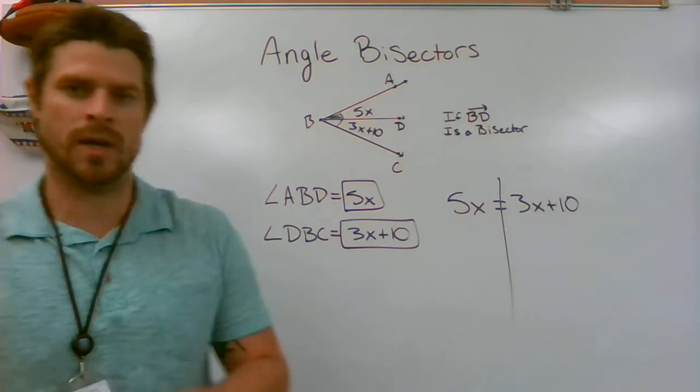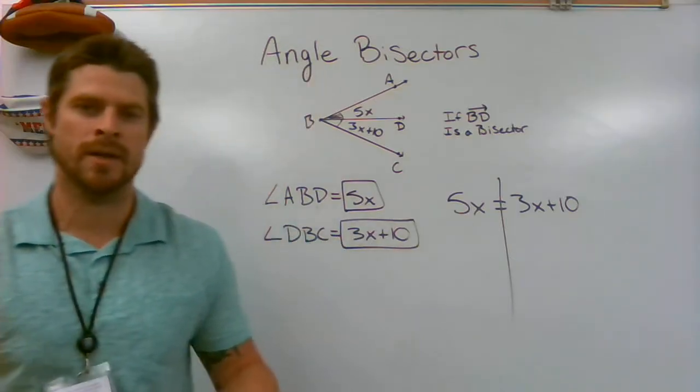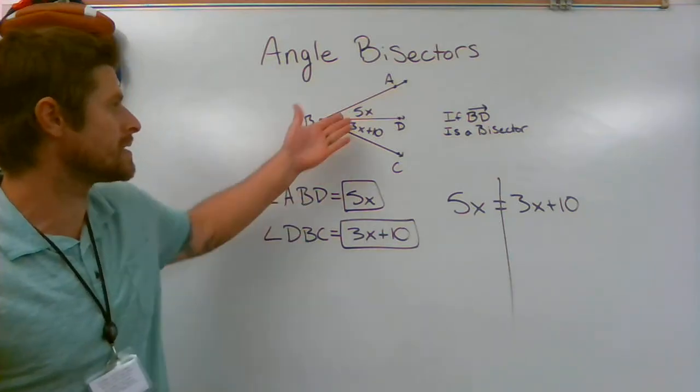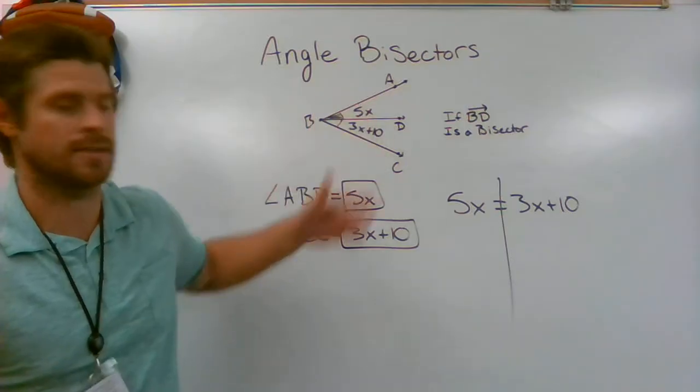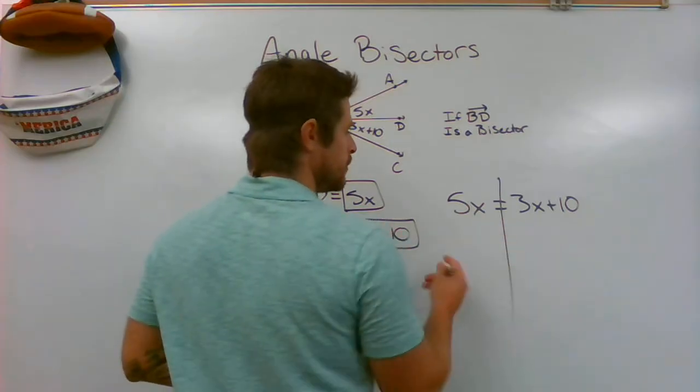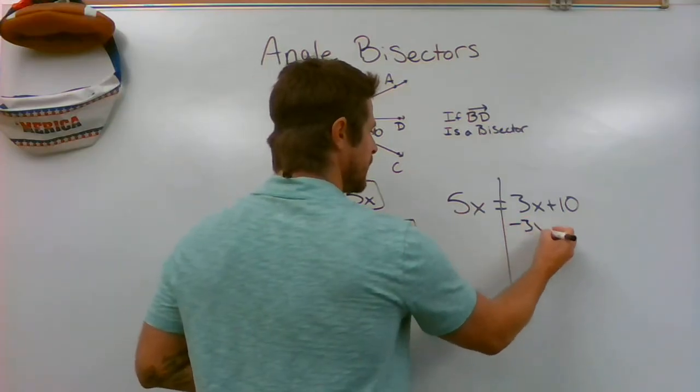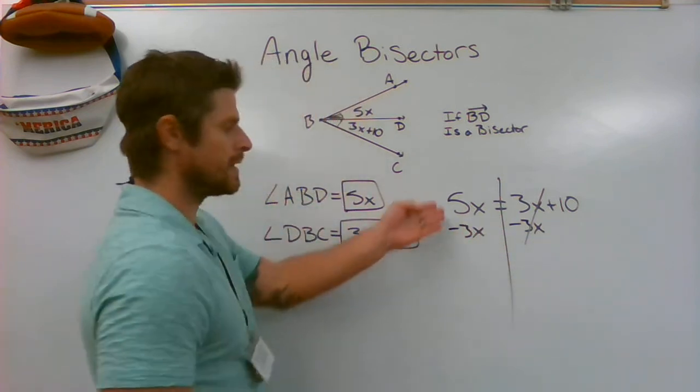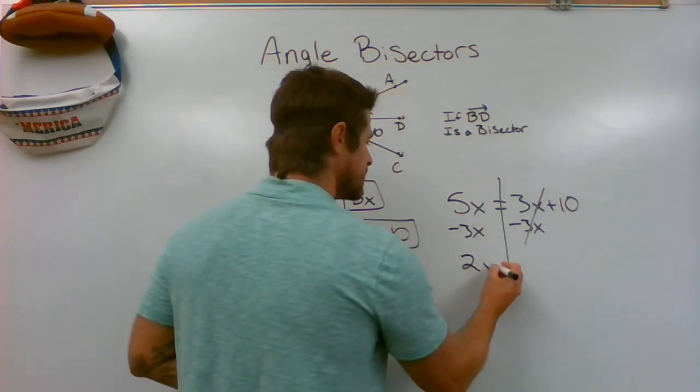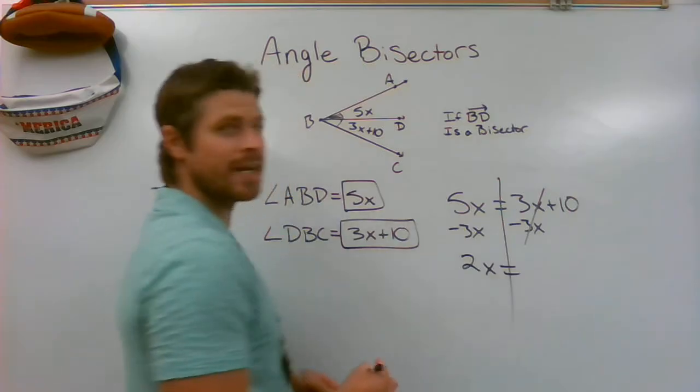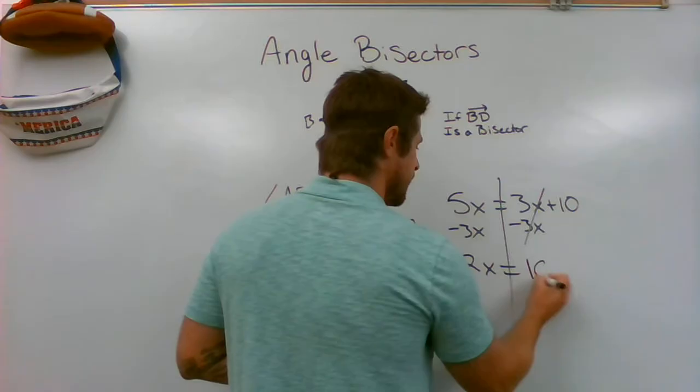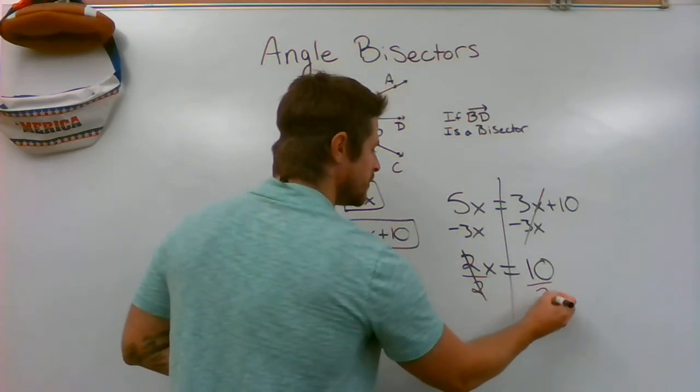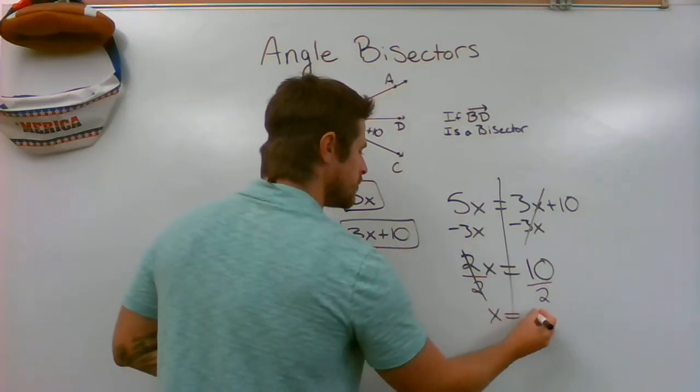Now we go back one year from geometry back to algebra. We do our algebra. We figure out what x is. Once we know what x is, we can plug it in, and it will tell us exactly how big each angle is. So how do I do variables on both sides? I'm going to have to subtract 3x from this side, subtract 3x from this side. Like terms, now I have 2x, and it's equal to 10. Divide by 2 to cancel out the 2. Divide by 2. x equals 5.